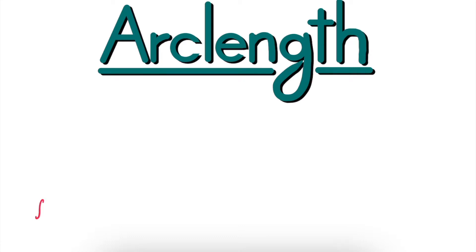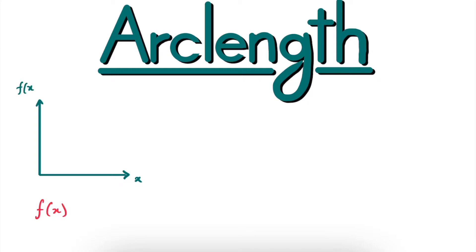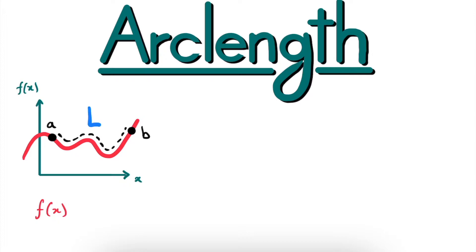Let's say that we have the function f of x and we want to look at its graphical representation. For this we need an x-axis, which is the horizontal axis, and a perpendicular y-axis, otherwise known as the f of x-axis. The graphical representation of our function looks something like this — just a wiggly line that sometimes goes up and sometimes goes down. The arc length of this function between the points a and b is simply the length of the segment bounded by these two points, and this length we denote by capital L.